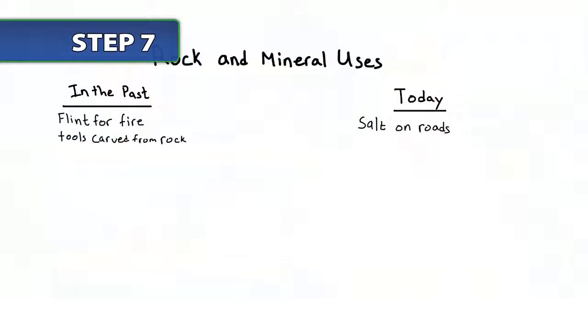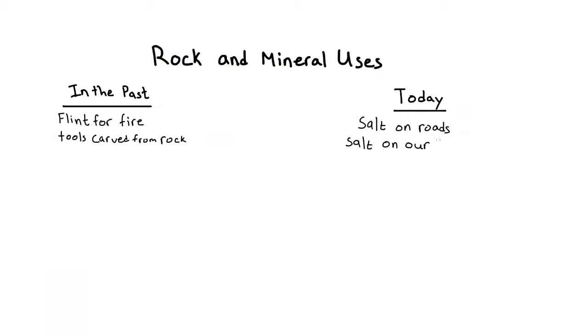Finally, have students add to the lists they started in activity one of the different ways that rocks and minerals are used today and how they have been used in the past. Tell them to identify applications that require a shiny luster, a dull luster, a metallic luster, and so on.